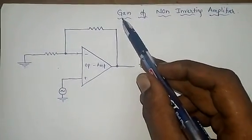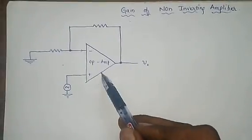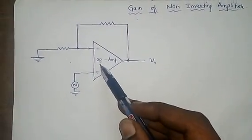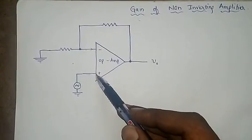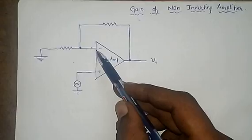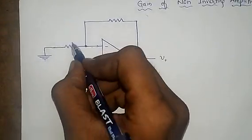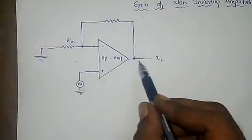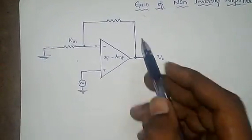Derivation for finding the gain of a non-inverting amplifier. This is the circuit diagram of a non-inverting amplifier. Here the signal is connected to the non-inverting terminal, and the inverting terminal is connected to ground through an input resistor Rn. A feedback resistor is connected between the inverting terminal and the output terminal.